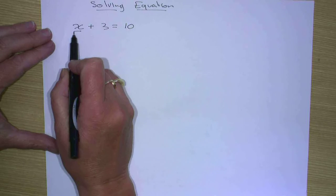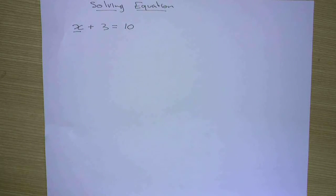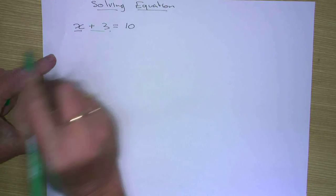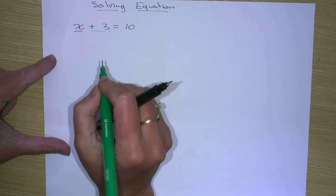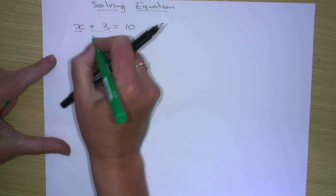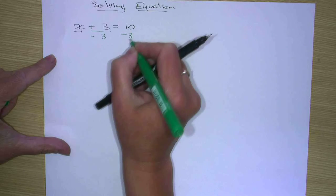Now to get the x on its own, we need to get rid of the plus 3. Because the plus 3 here is added to our x. To get rid of the plus 3, we need to subtract 3 from both sides. So we do the opposite. So we minus 3 from this side and minus 3 from this side.